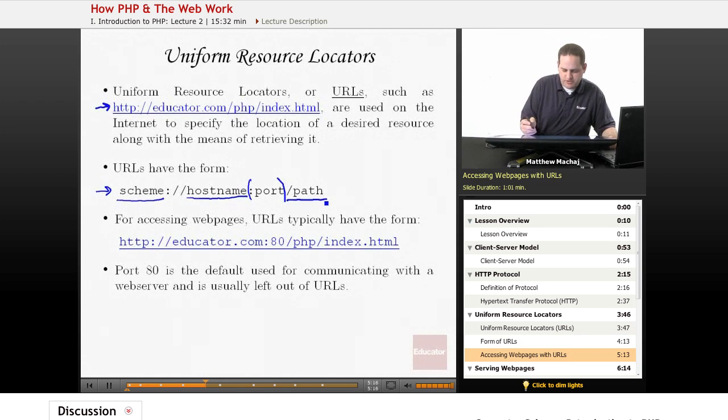So for accessing web pages, URLs typically have the form shown here. For the scheme, it has, as we saw on the last slide, the HTTP specified, and that specifies that you should use the HTTP protocol to load a particular resource on the web. In this case, the resource is a file called index.html, and then index.html is located in the PHP directory on the server, educator.com, and the way that you connect to that server at educator.com is using port 80.